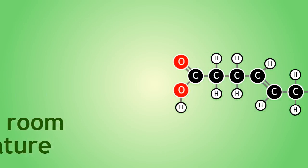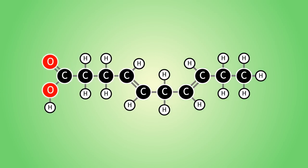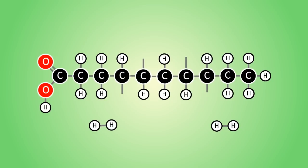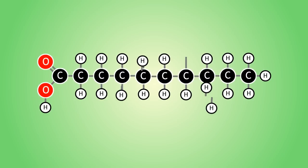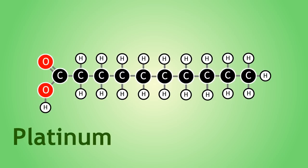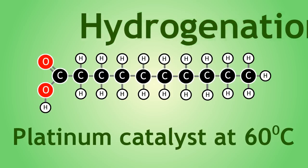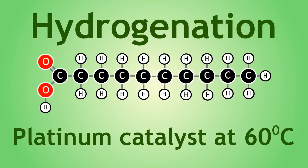We can hydrogenate, or add hydrogens to, carbon-carbon double bonds by passing hydrogen gas over these molecules in the presence of a platinum catalyst at 60 degrees Celsius. This is a hydrogenation reaction.